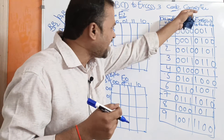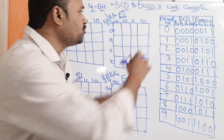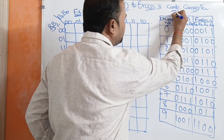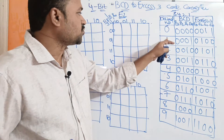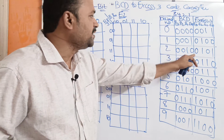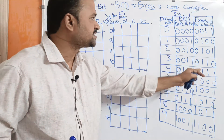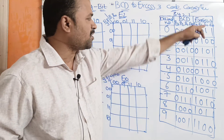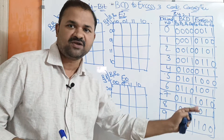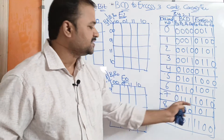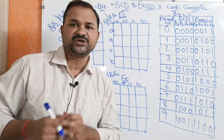We represent the BCD number in 8421 notation. So 0 means all 0s. 1 means 0001, 2 means 0010, 3 means 0011 (sum of 2 and 1), 4 means 0100, 5 means 0101 (sum of 4 and 1), 6 means 0110 (sum of 4 and 2), 7 means 0111 (sum of 4, 2, 1), 8 means 1000, 9 means 1001 (sum of 8 and 1).